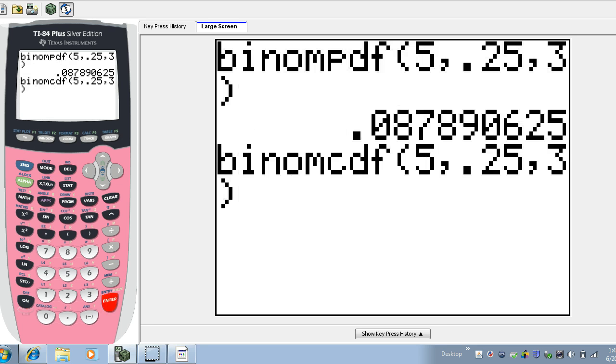So this calculation right now is actually not quite what we're looking for. It sums the probabilities of zero, one, two, or three successes. But we don't want zero, one, two, or three successes. We want four or five successes. So that would be the complementary event.